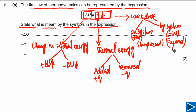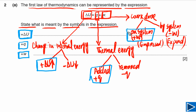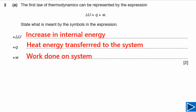Now that we have understanding of these symbols, we can write down our answer for part A. Delta U positive means increase in internal energy. Plus Q means heat energy is transferred to the system. And plus W means work is done on the system.